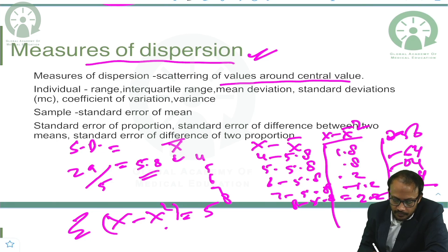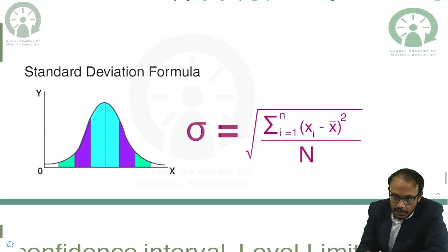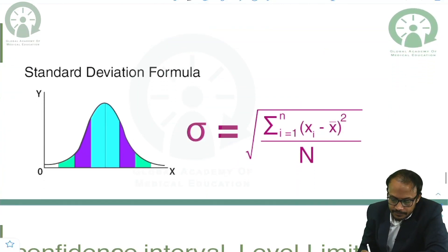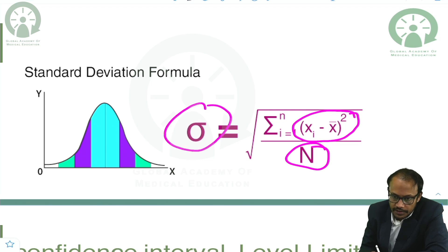We then divide this sum by n. You can see the formula here: summation of all (x minus mean)² upon n, where n is the frequency. This gives the variance, and the square root of this is the standard deviation. This sigma symbol is the sign for standard deviation.